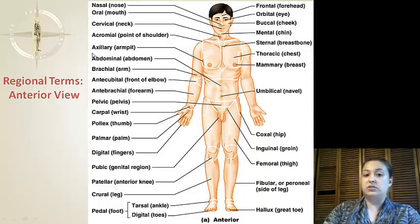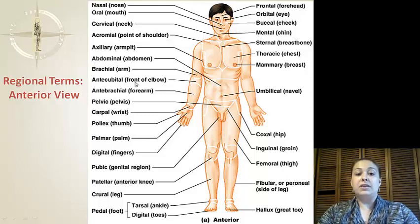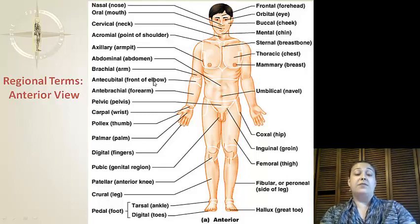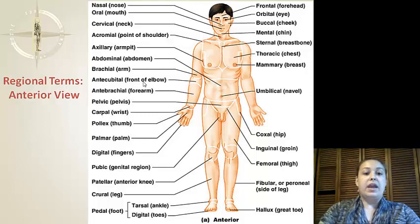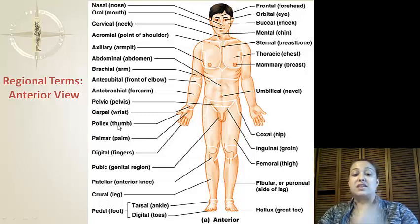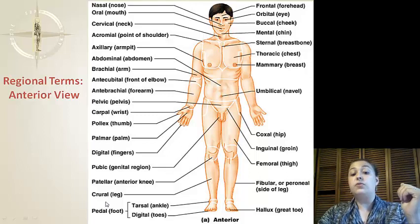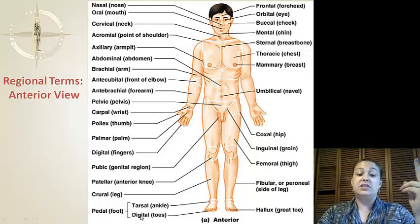The acromial is the point of the shoulder. Axillary is the armpit. Abdominal is the abdomen. Brachial is the arm. Antecubital is the front of the elbow, because we're looking from the anterior or front view. Antebrachial is the forearm — again, the front of it. Pelvic is the pelvis. Carpal is the wrist. Pollex is the thumb. Palmar is the palm. Digitals are fingers. Pubic is the genital region. Patellar is the anterior part of the knee — the front of the knee. And crural is the leg. The foot is known as the pedal, and it has the tarsal, which is the ankle, and the digitals, which are the toes.